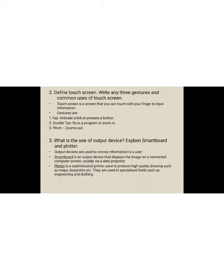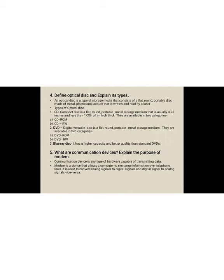Next question: what is the use of output devices? Explain smartboard and the plotter. Output devices are used to convey information to a user. A smartboard is an output device that displays the image on a connected computer screen, usually via a data projector. A plotter is a sophisticated printer used to produce high quality drawings such as maps and blueprints, and is used in specialized fields such as engineering and drafting.